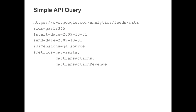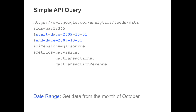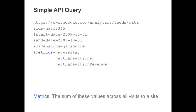Here is a sample query that can be used to request data from the API. The IDs parameter defines from which profile to retrieve data. The start and end date parameters define the date range to be the entire month of October. The dimensions parameter says to retrieve all sources of traffic, and the metrics parameter says to retrieve the total number of visits, transactions, and revenue for each source of traffic. When we make a request with this query to the API, we get a lot of XML back. That XML can be transformed into a table, which looks like this.